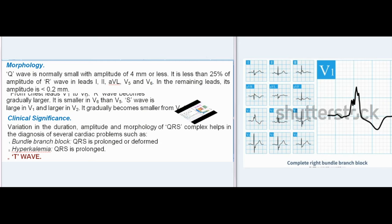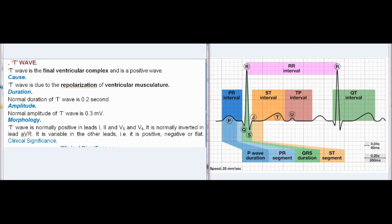Hyperkalemia — QRS is prolonged. T-wave: T-wave is the final ventricular complex and is a positive wave. Cause: T-wave is due to repolarization of ventricular musculature. Duration: Normal duration of T-wave is 0.2 second. Amplitude: Normal amplitude of T-wave is 0.3 mV. Morphology: T-wave is normally positive in leads I, II, V5, and V6. It is normally inverted in lead AVR. It is variable in the other leads — positive, negative, or flat.